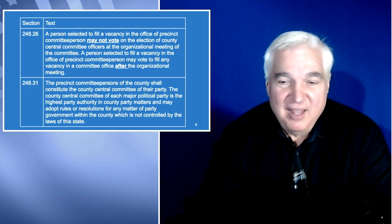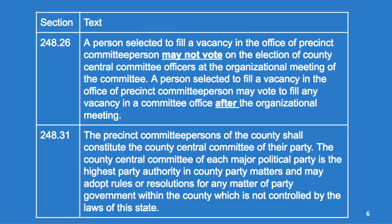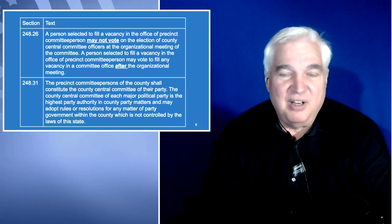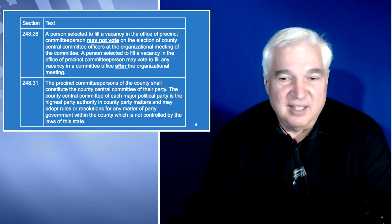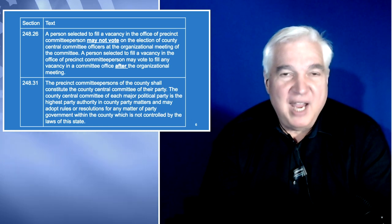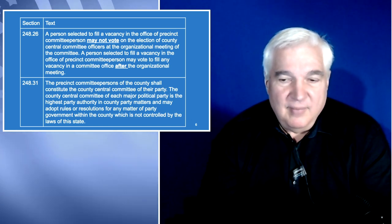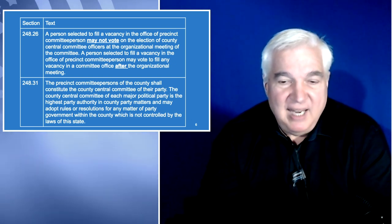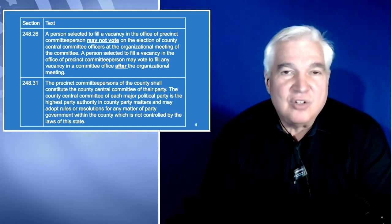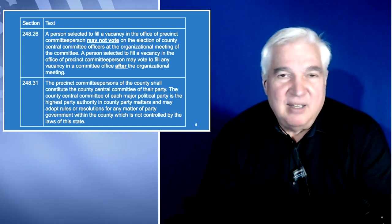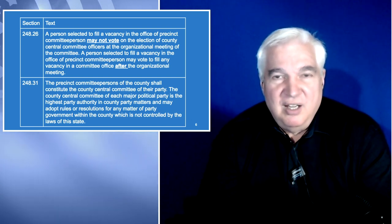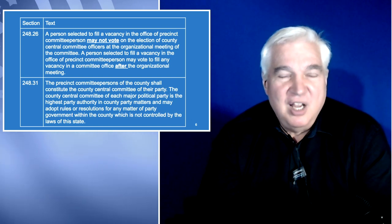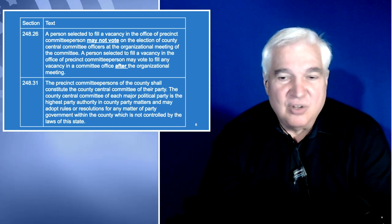Section 248.26: a person selected to fill a vacancy in the office of precinct committee person may not vote on the election of a county central committee officer at the organizational meeting. If you are not elected — which is what is meant by 'a person selected to fill a vacancy' — then you cannot vote for the officers. However, a person appointed to fill a vacancy may vote to fill any vacancy in a committee officer after the organizational meeting. So this limitation only applies to the reorganization meeting itself.